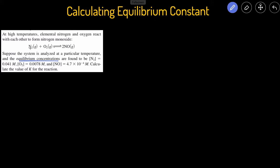In this problem, we are given the balanced chemical reaction — we know this is balanced because we have coefficients of 1, 1, and 2. We are also told that we have the equilibrium concentrations of the reactants and products. You can start by writing out the equilibrium expression, capital K, which is equal to the concentration of the products over the concentration of the reactants.